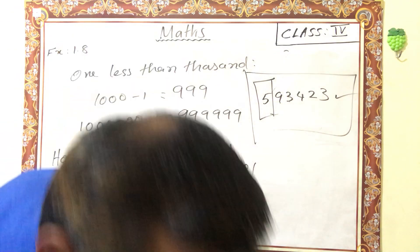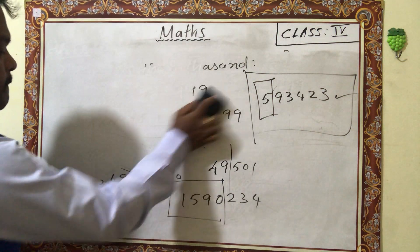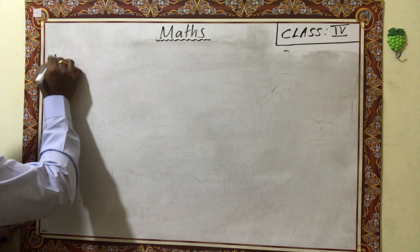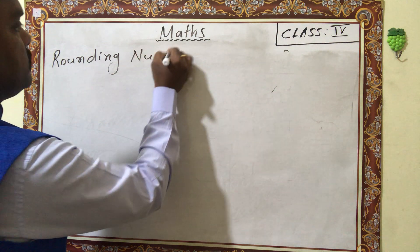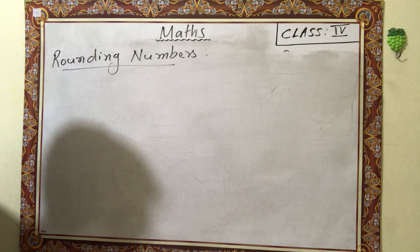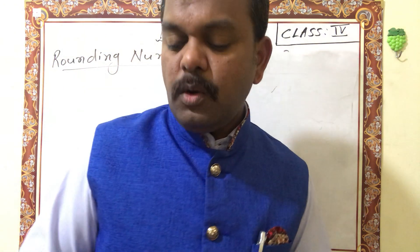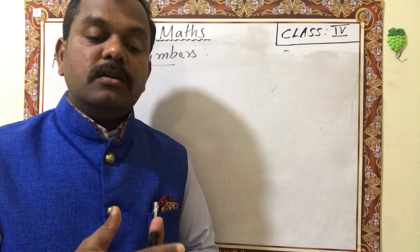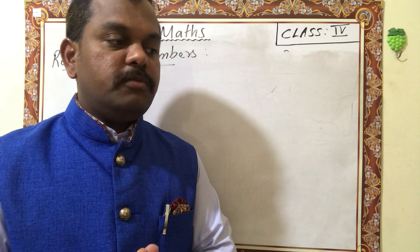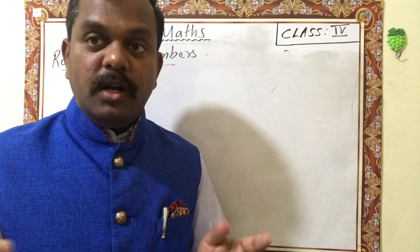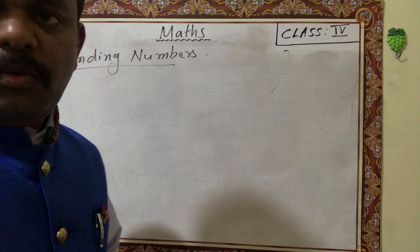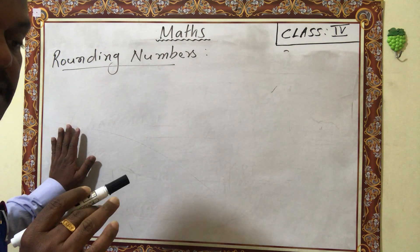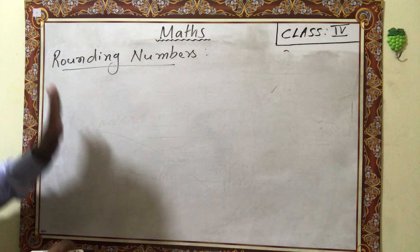The next topic is rounding numbers. Why do we round numbers? For example, if you are traveling by bus and 40 or 45 passengers are traveling with you, and someone asks how many passengers are there — you won't count them all. You simply say maybe 50 passengers. That is called rounding numbers — we say approximately 50.